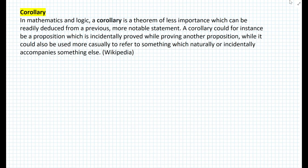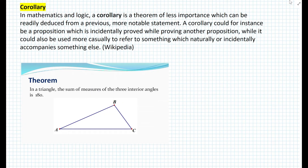In our previous video, we actually proved the following theorem: that in a triangle, the sum of the measures of the three interior angles is 180. We proved that theorem. Now a corollary is a theorem that emerges from this theorem — it's a proposition. We proved the main theorem and now we can develop other theorems pertaining to triangles that emerge from that.